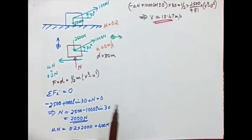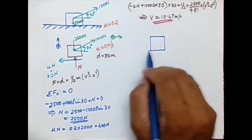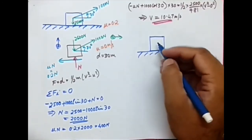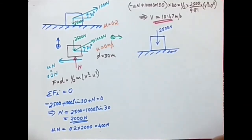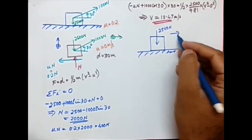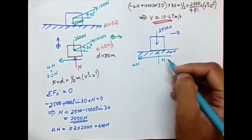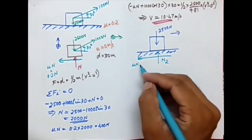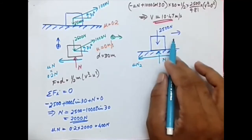The second part states that after moving 30 meters the 1000 Newton force is removed. We now consider the condition of the block after 30 meters. The block is still moving with no 1000 Newton applied force. The weight remains 2500 Newton, and the frictional force still acts to the left. However, the normal force N may be different because the 1000 Newton force was previously contributing to it.